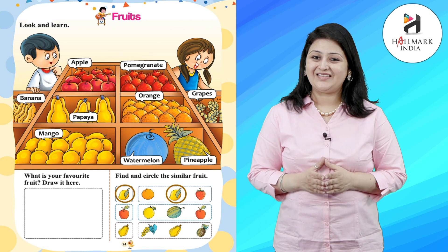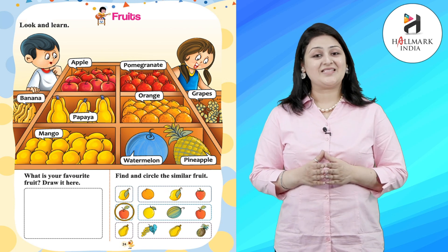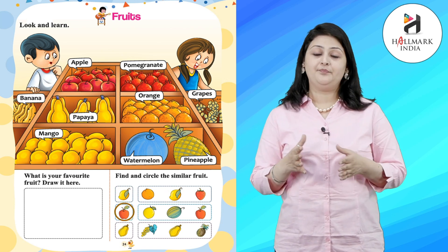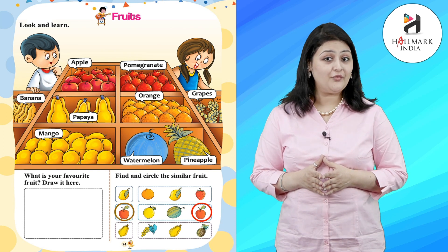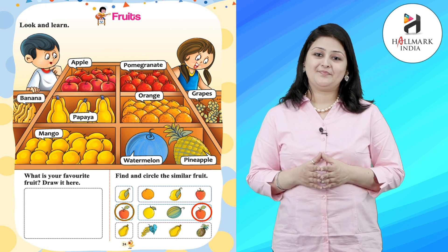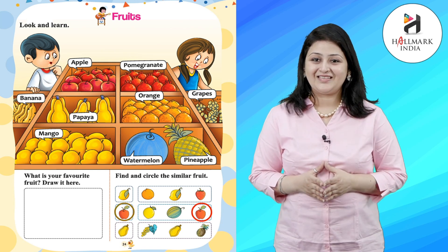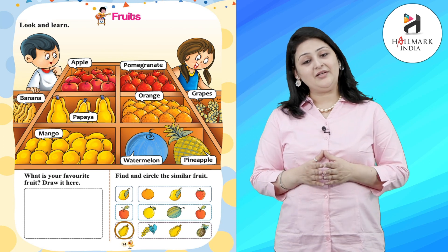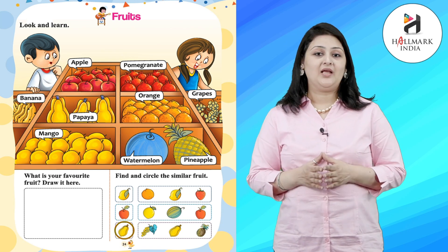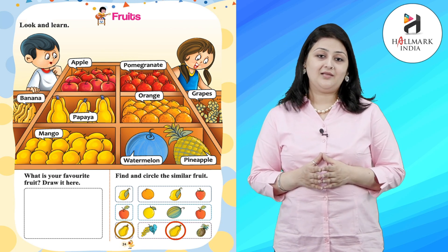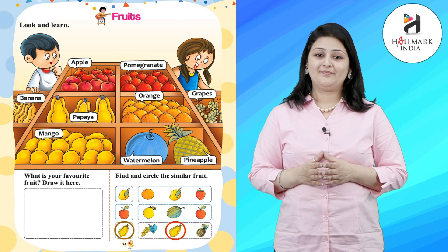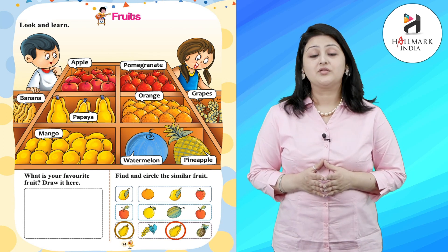Very good. In the second picture, we have an apple. Let's circle the similar fruit. Very good. In the third picture, we have a papaya. Let's circle the similar fruit. Very good.